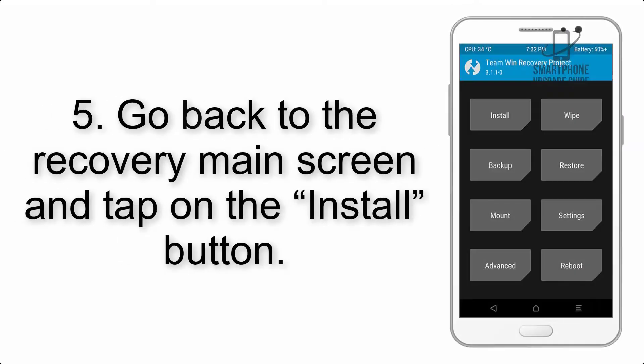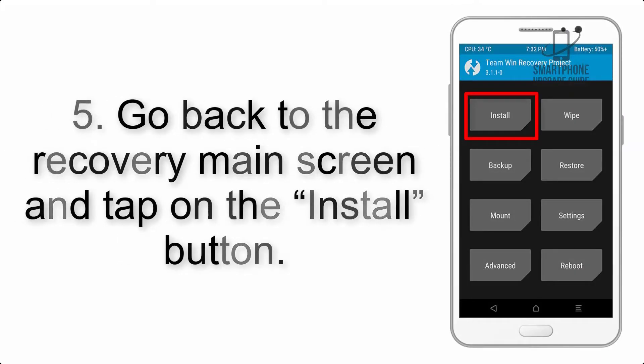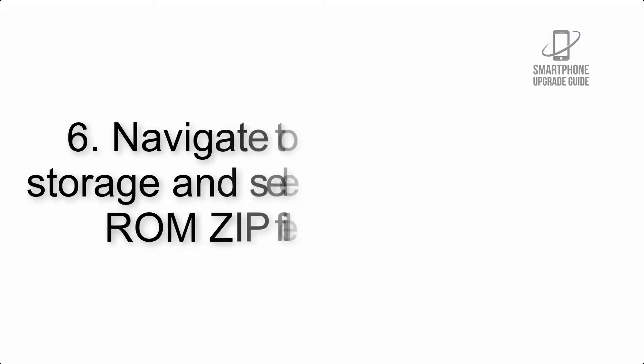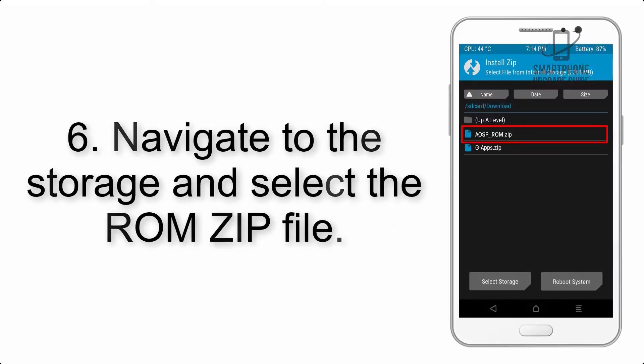Step 4: Swipe the button to wipe the device. Step 5: Go back to the recovery main screen and tap on the Install button. Step 6: Navigate to the storage and select the ROM zip file.